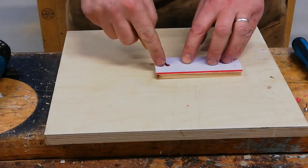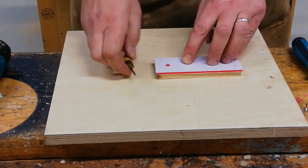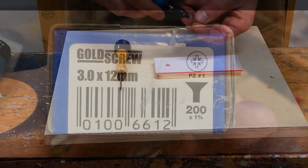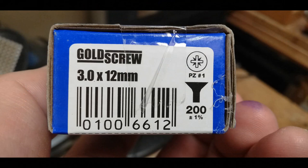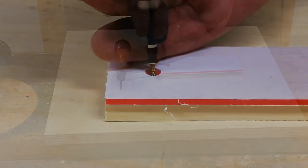Take the braddle and make a small mark in the timber so the screws can go in. We're using 3x12mm screws, 12 being the length, 3 being the diameter.